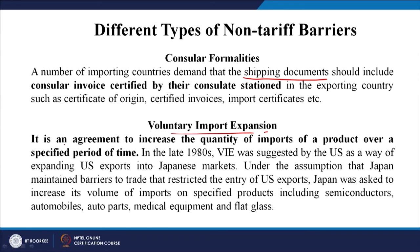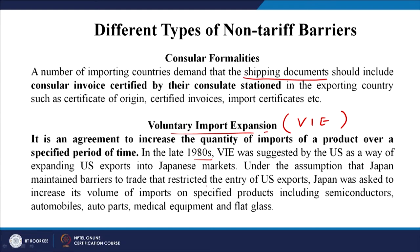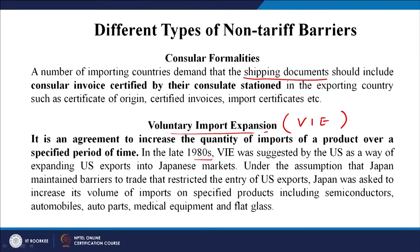Voluntary import expansion (VIE) is an agreement to increase the quantity of imports of a product over a specific period. For example, in the 1980s VIE was suggested by the US as a way of expanding US exports into the Japanese market, under the assumption that Japan maintained barriers restricting US exports. Japan was asked to increase its volume of imports on specific products including semiconductors, automobiles, auto parts, gas, medical equipment, and flat glass.